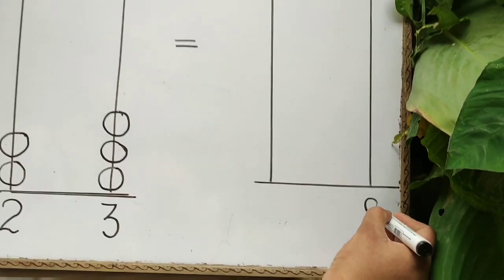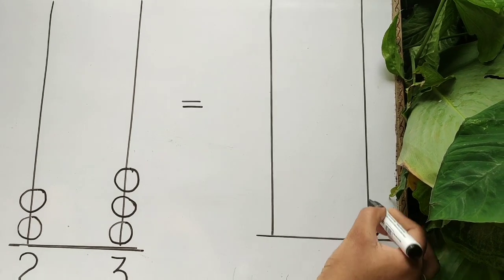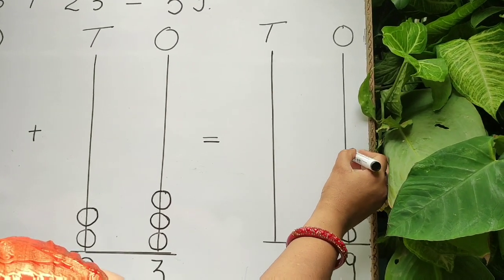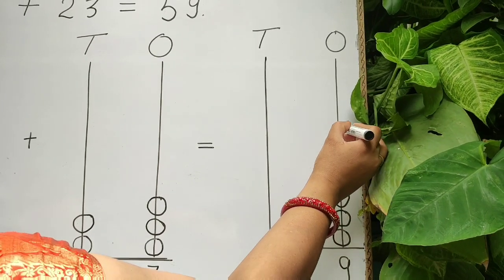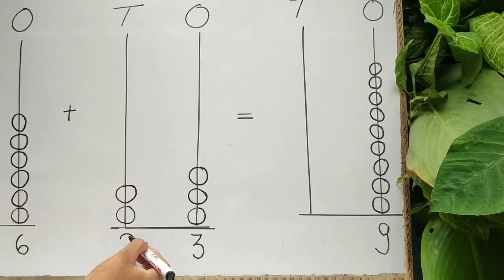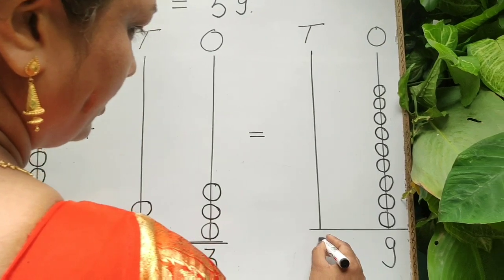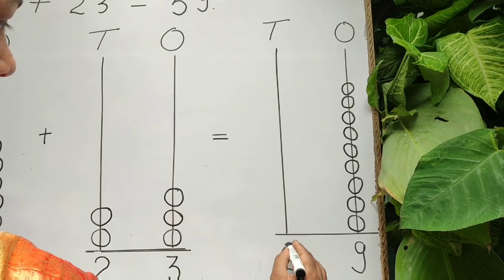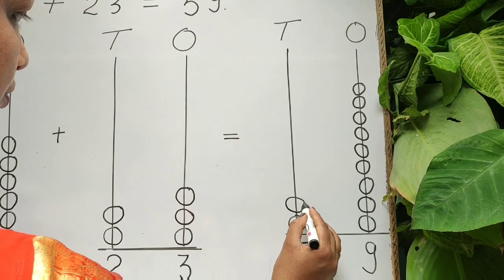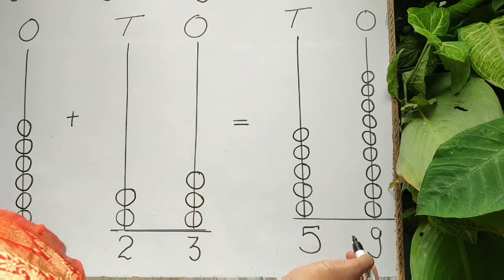Let's add the ones rod: one, two, three, four, five, six, seven, eight, nine. Write down nine here. Let's add the tens rod beads: one, two, three, four, five. Write down five under the tens rod.